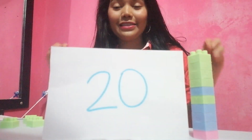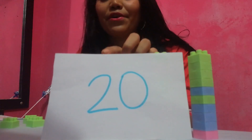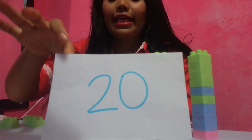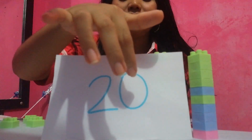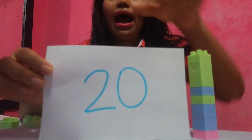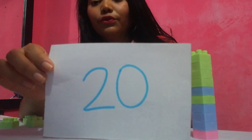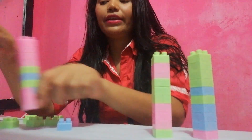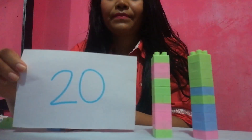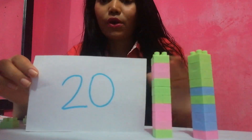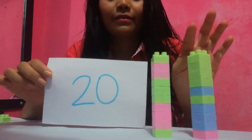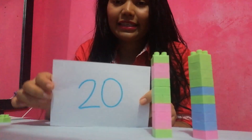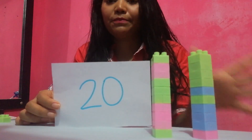So guys, it's time to practice using numbers. Look at this number — twenty. The first digit is the tens place and the second digit is the ones place. How many tens do I need? Two. So I'm going to put only two tens. How many ones do I need? Zero — so no ones. Bye-bye ones. Ten, twenty. Twenty is the number I have here, using place value.